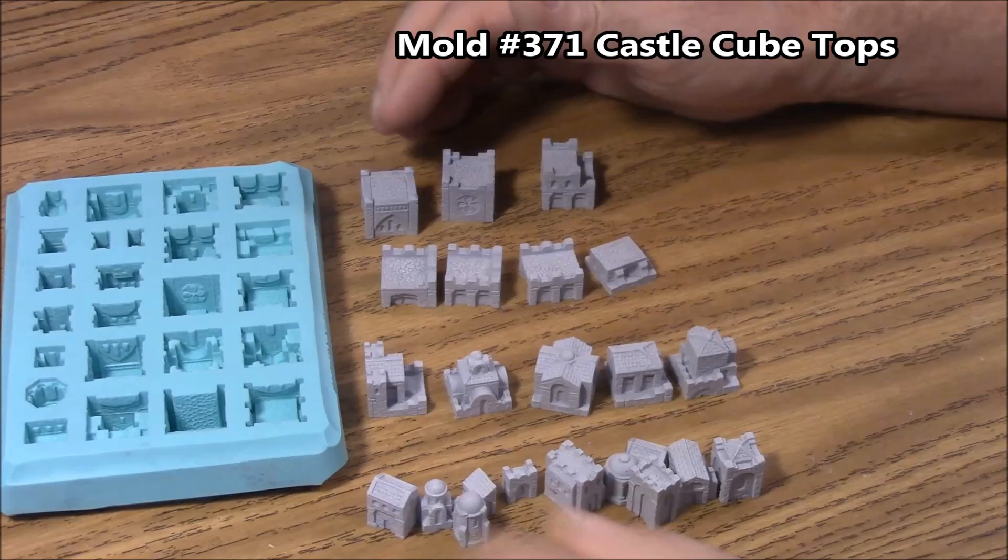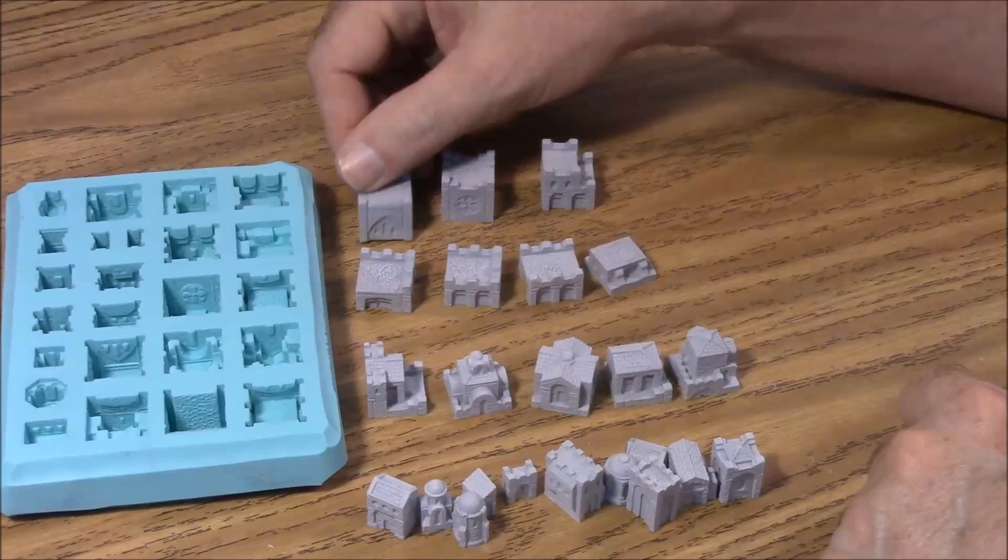Now this is mold number 371, which are the castle cube tops. And I'm going to give you a few strategies on how to use this.